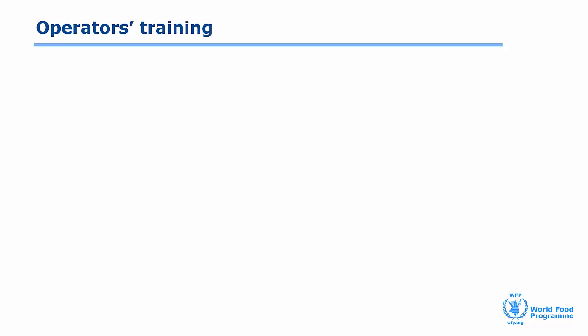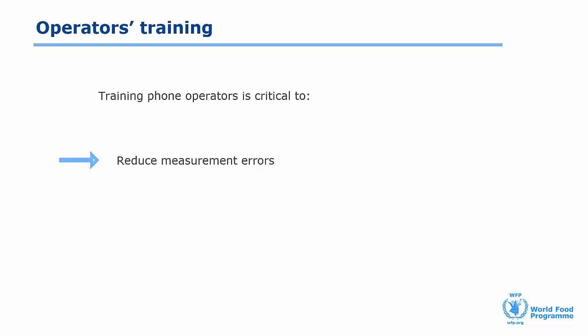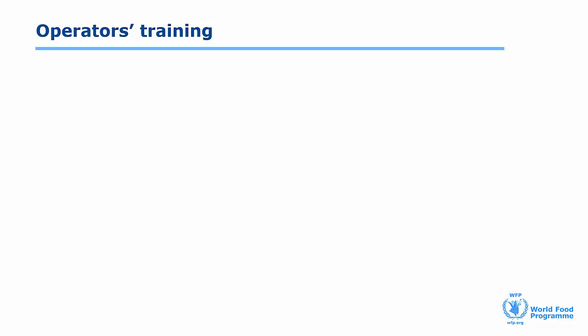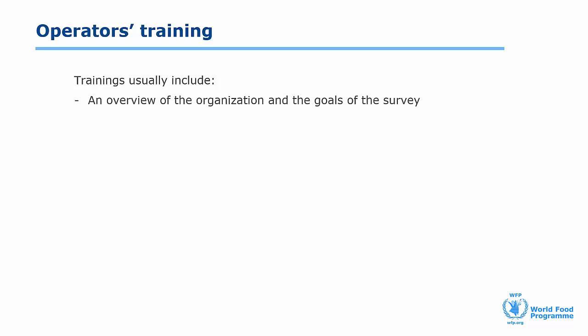Providing training to phone operators is critical to reduce measurement errors — defined as the difference between the value provided by the respondent and the true value — and to reduce phone operator bias, a bias originating from unintentional operator behaviours. This could be an incorrect interpretation of respondent answers or manner of posing questions. A more in-depth data quality discussion and explanations on how to minimise errors and bias can be found in lesson 9, data management and analysis. To maximise data quality, MVAM organises periodic trainings both at in-house and external call centres.